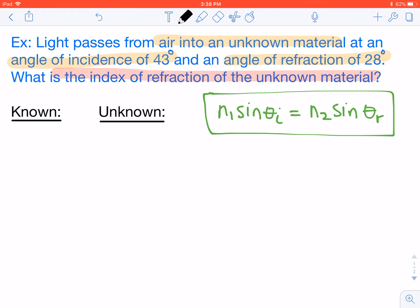So as we take a look and start listing our known and unknown values for this problem, we know that we're going from air to our material. Air is our first material, and air always has an index of refraction of 1.0. We also know our angle of incidence, which is 43 degrees, and our angle of refraction, which is 28 degrees.